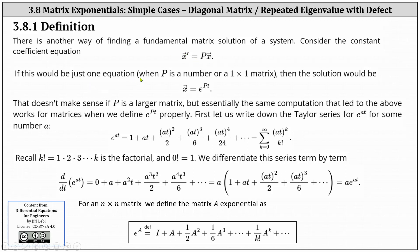If this would be just one equation when p is a number, or a one by one matrix, then the solution would be x equals e to the power of pt. This doesn't make sense if p is a larger matrix, but essentially the same computation that led to the above works for matrices when we define e to the power of pt properly.